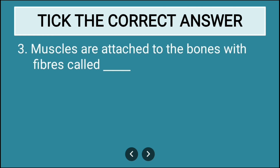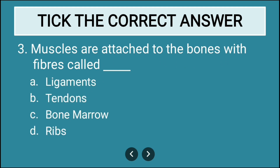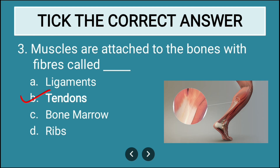Third question: The muscles are attached to the bones with fibers called dash. Options are ligaments, tendons, bone marrow, or ribs. Muscles are attached to the bones with the fiber called tendons — T-E-N-D-O-N-S. Option B, tendons, is the correct answer.